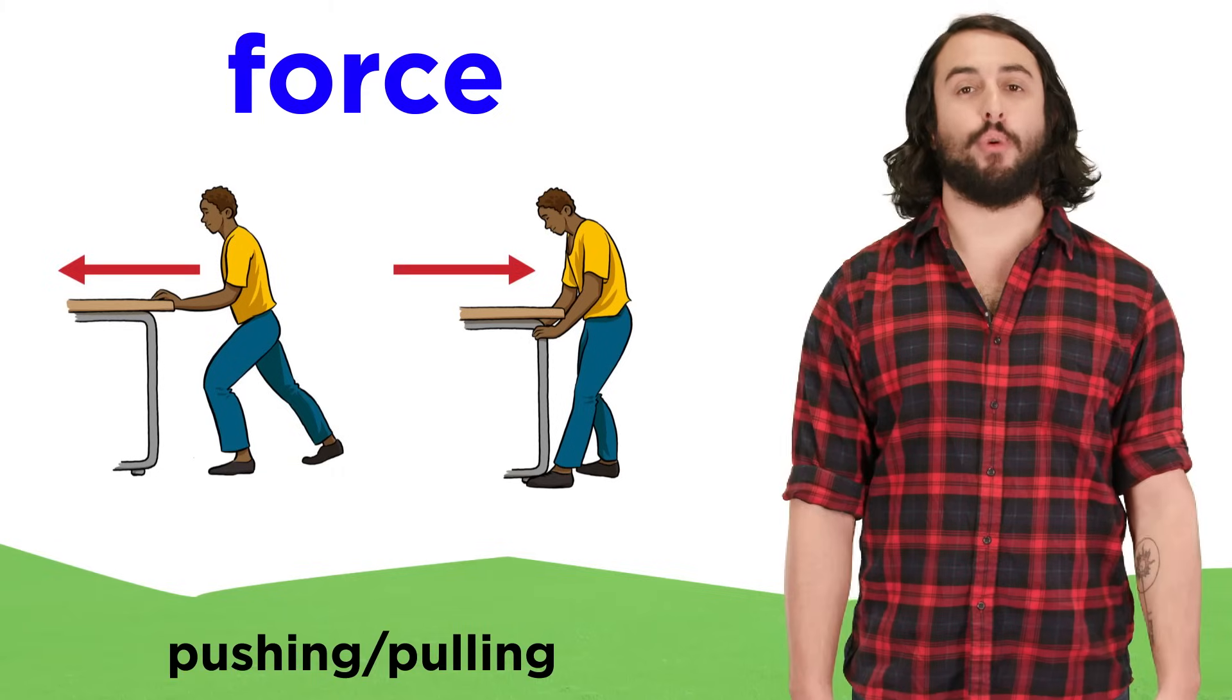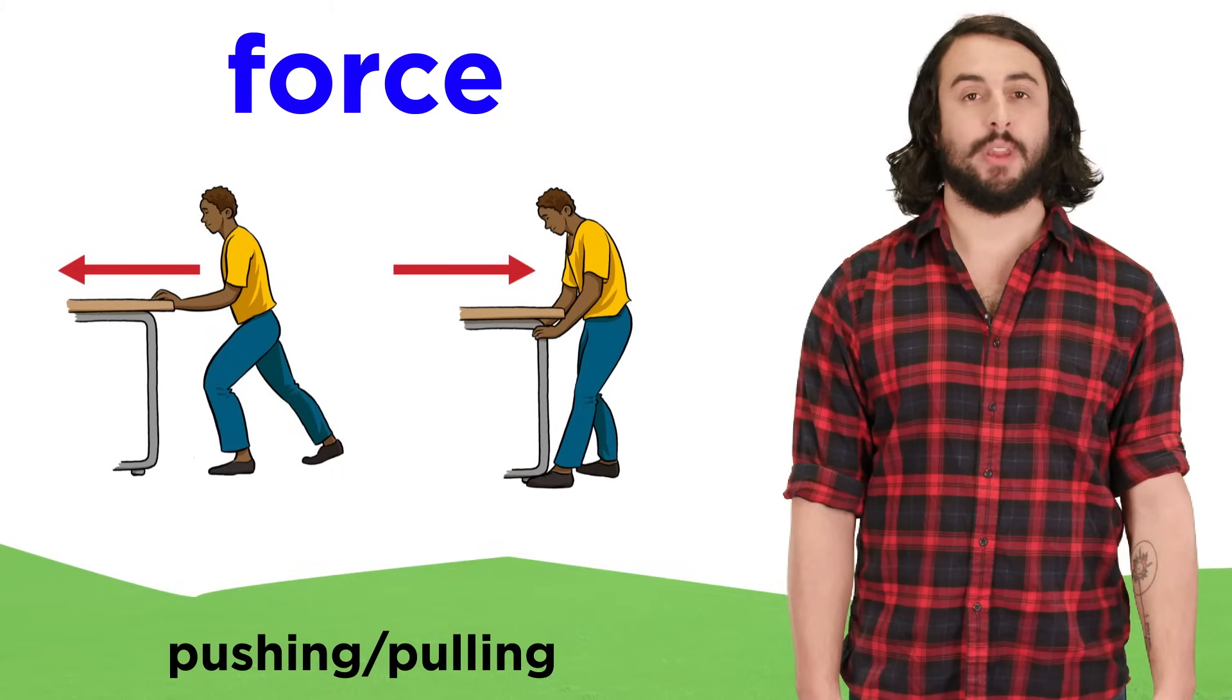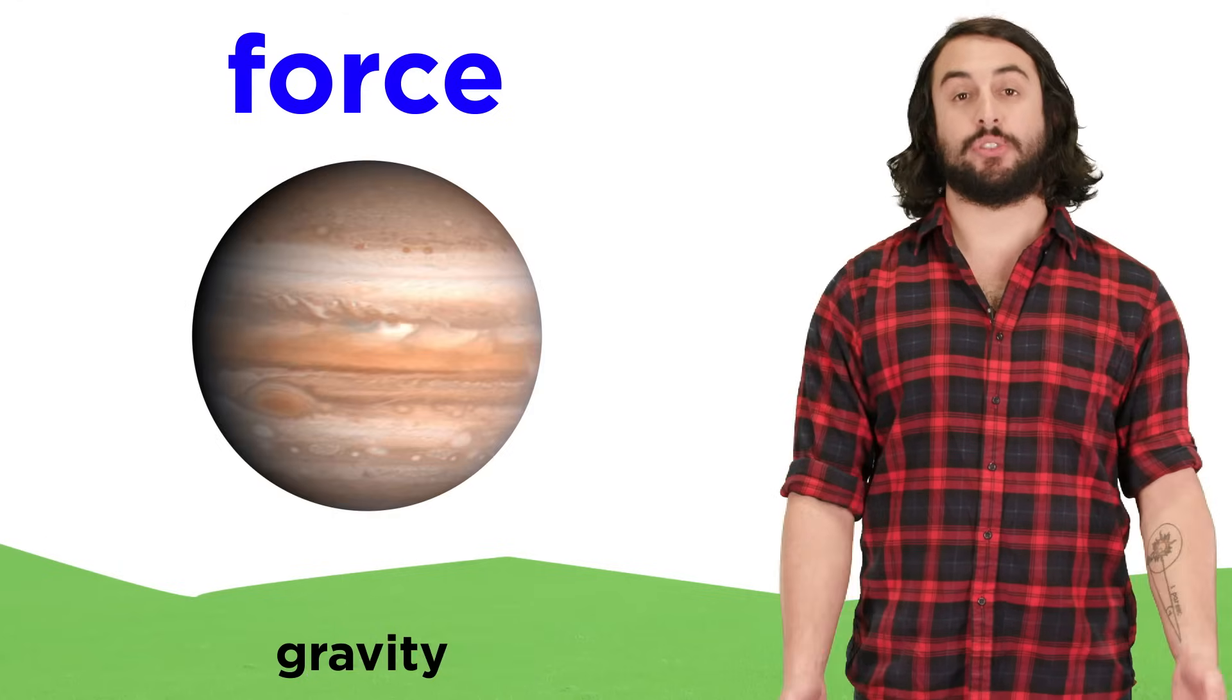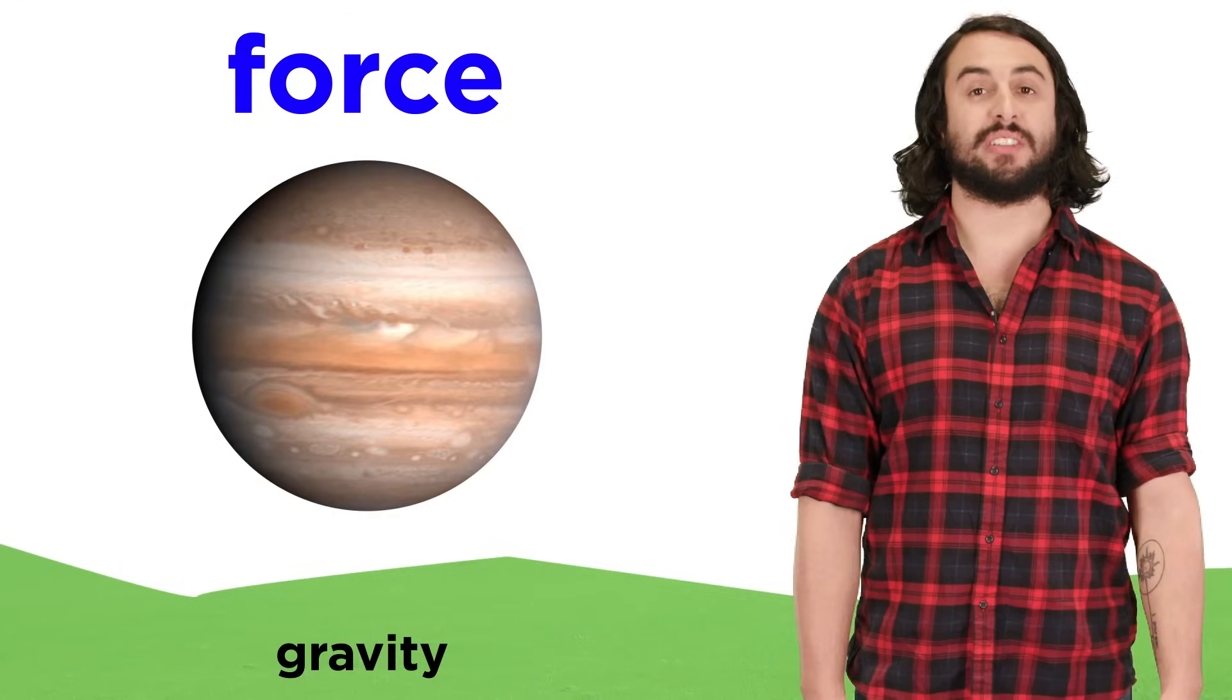A person can exert force by pushing or pulling. An object can exert force by falling or rolling. A planet or star can exert force through its gravitational pull.